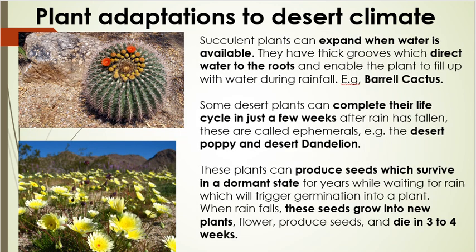Succulents can expand when water is available. The barrel cactus, shown in the top left, is shaped like a barrel and can actually grow in size when it rains — by growing, it increases its surface area to catch more water. The barrel cactus also has thick grooves which act like mini water channels, directing water down to the roots and enabling the plant to fill up with water during rainfall. This means that when it does rain, the barrel cactus takes full advantage.